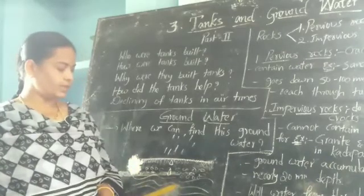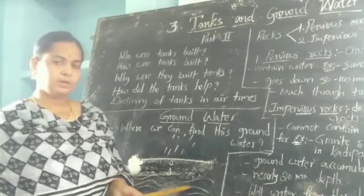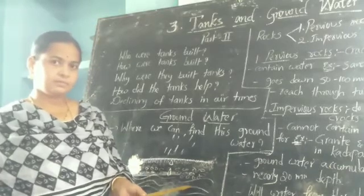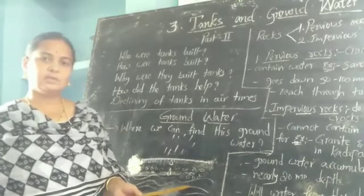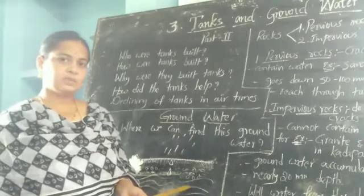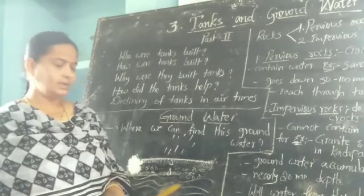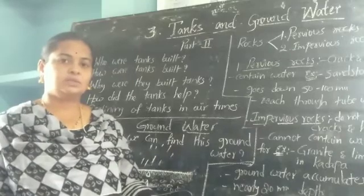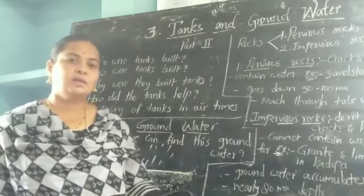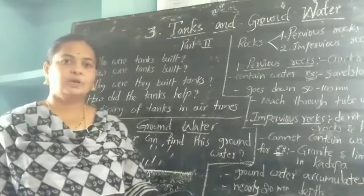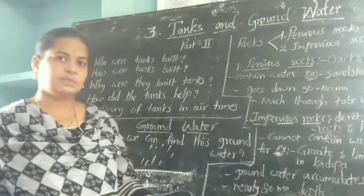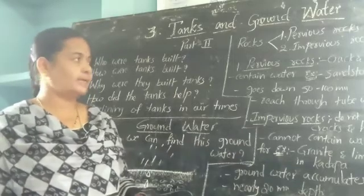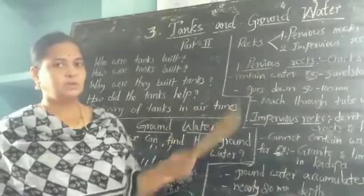How can we reach this groundwater layer? By using bore wells and deeper tube wells we can reach this layer. Under the ground we have two types of rocks: the first is pervious rocks, and the second is impervious rocks.